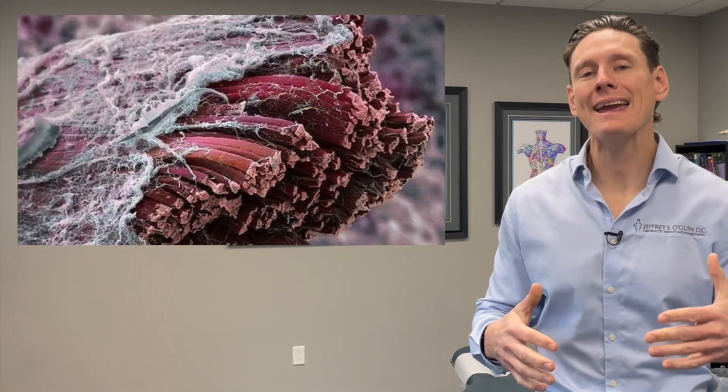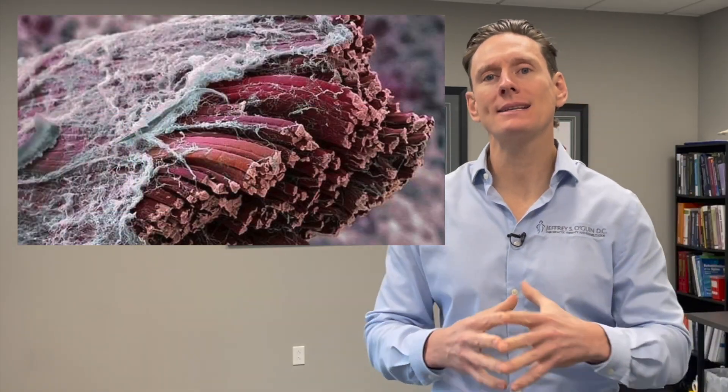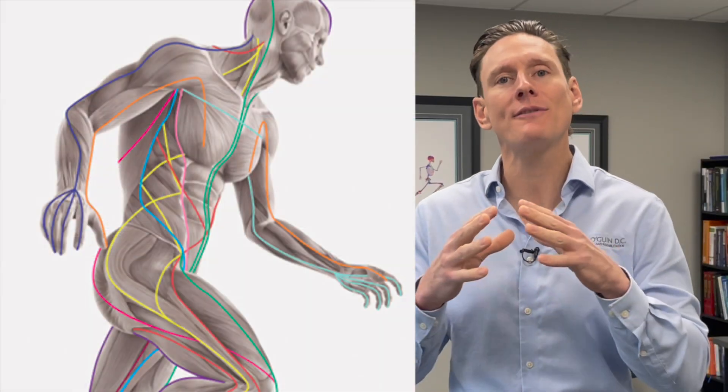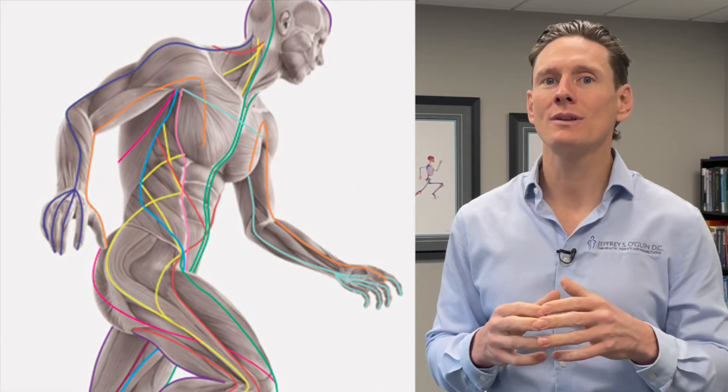Myo means muscles, and fascia is the gluey web of connective tissue that binds and holds it all together. The fascia gives the muscles their structure and support. When you combine these two words together — myofascial — it is essentially discussing the unity and the interconnectedness of these two systems. In this video, I want to talk about what myofascial release is, who performs it, who needs it, and the difference between myofascial release and getting a massage.